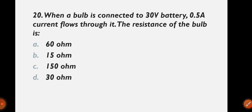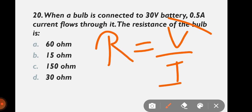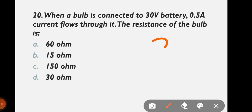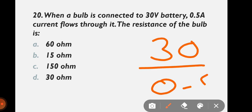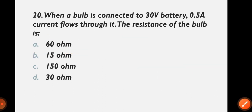Question 20 (last question): When a bulb is connected to a 30-volt battery, 0.5 ampere current flows through it. The resistance of the bulb is — 60 ohm, 15 ohm, 150 ohm, or 30 ohm? Using R = V/I: R = 30 / 0.5 = 60. The correct answer is 60 ohm.